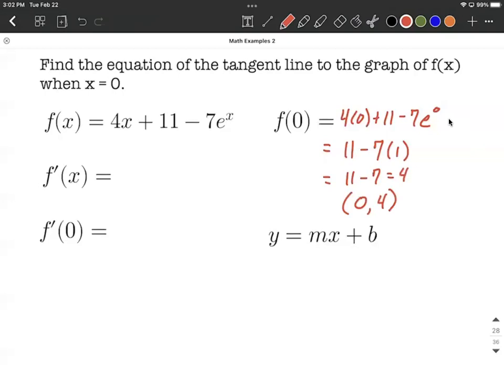That takes care of the ordered pair, the point we need to find this line. Next, let's find the derivative, one term at a time. For the first term, 4x, we bring the 4 along. The x is raised to the first power. By the power rule, we bring the exponent down, and then we have x^0 as we reduce the exponent by one.